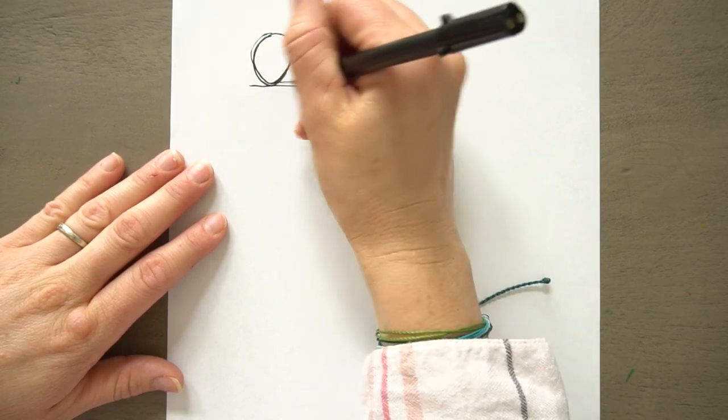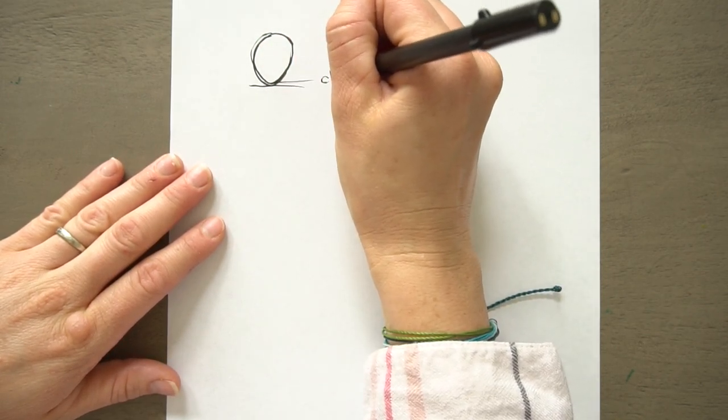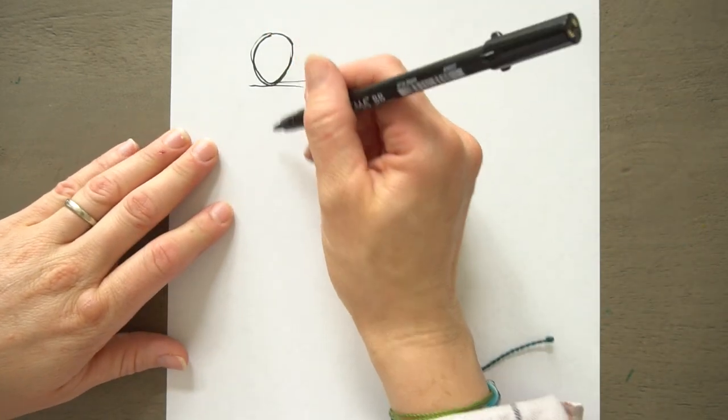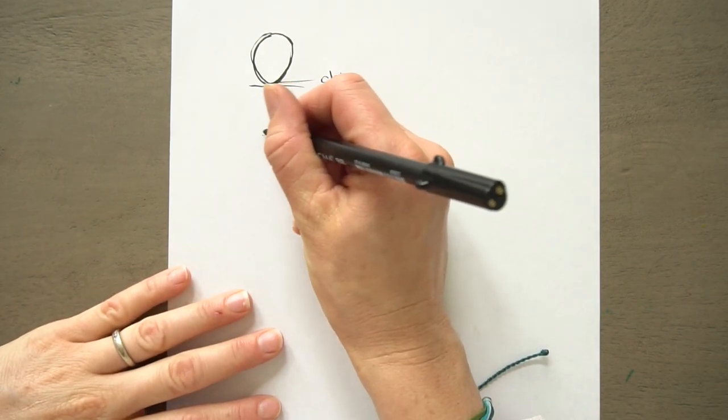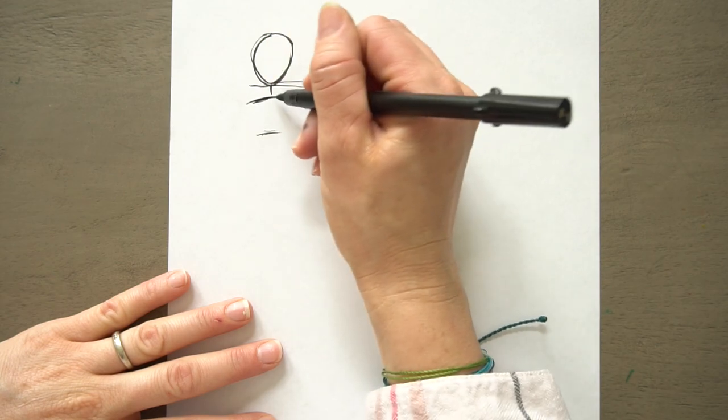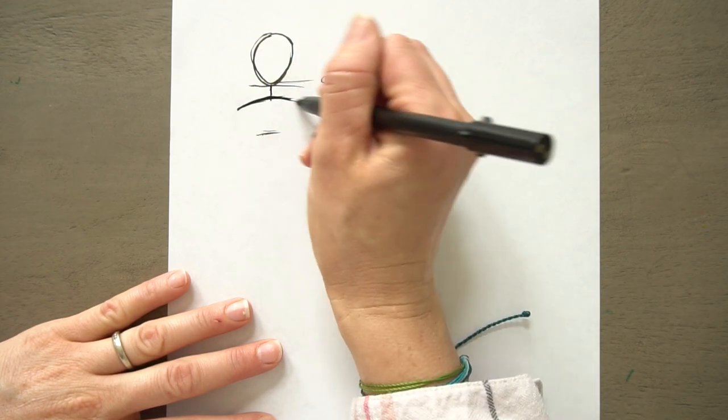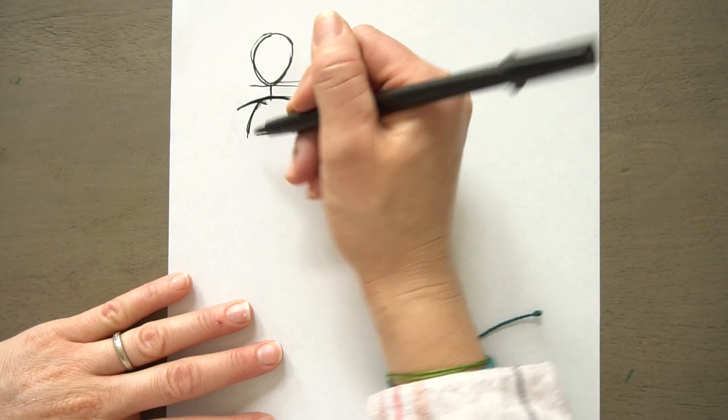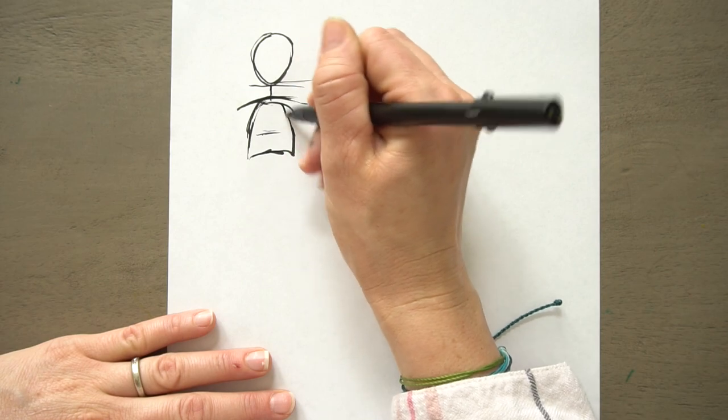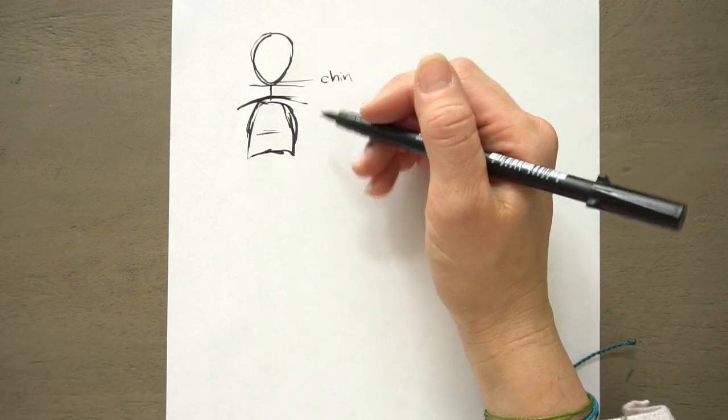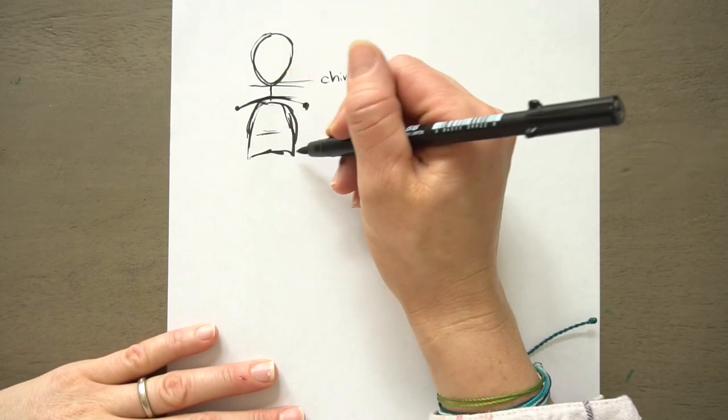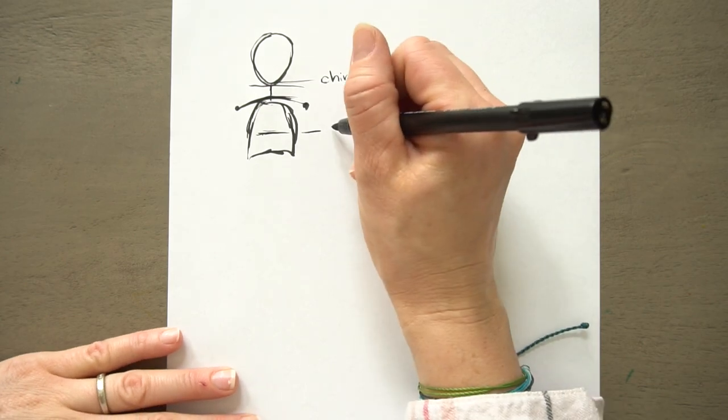This right here, this is the chin. So here's our face. Then we're going to measure down one more head. This is going to be where the top of your chest would be. In between there we have a neck, we have some shoulders, and then we have this rib cage. The chest would kind of be in the middle of that rib cage. So I'm just going to draw this upside down belt. These are the ribs, these are shoulders. The second head is the middle of the chest.